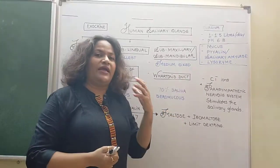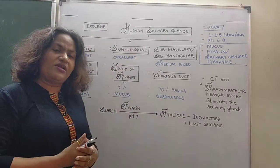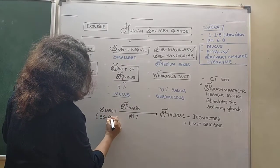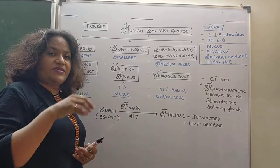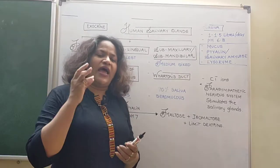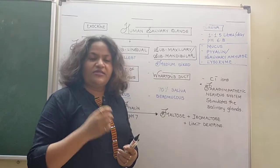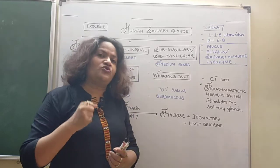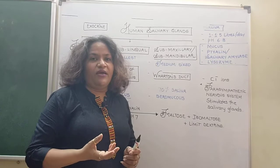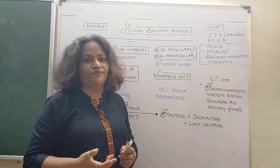Salivary amylase helps in partial digestion of starch — only 35 to 40 percent of the total starch in food undergoes digestion in the oral cavity. However, cooking the food and chewing it a maximum number of times helps digestion. As you keep chewing, the surface area on which the enzyme can act increases, so the more we chew the food, the better is the digestion.